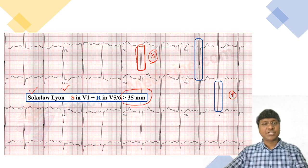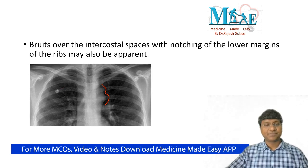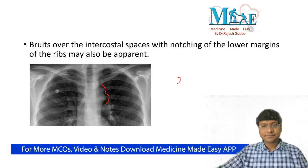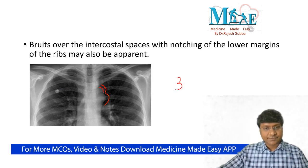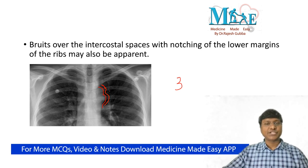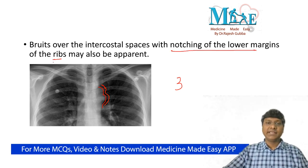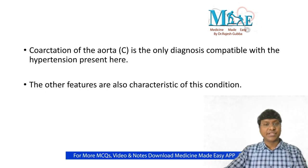In patients with coarctation of aorta, the chest X-ray is also very important. On X-ray you will see the '3 sign' — this is a very important finding. You will also see notching of the lower margins of the ribs on X-ray. These are the important X-ray findings in patients with coarctation of aorta.